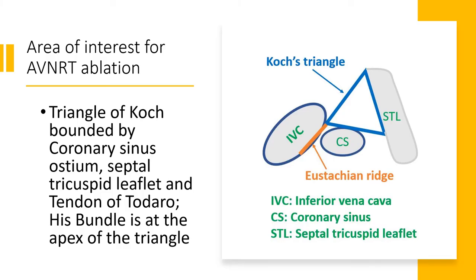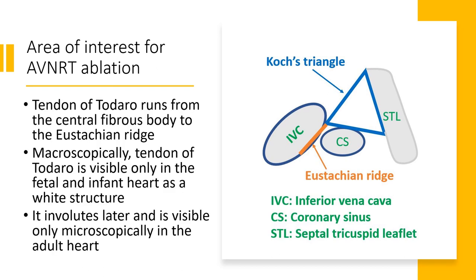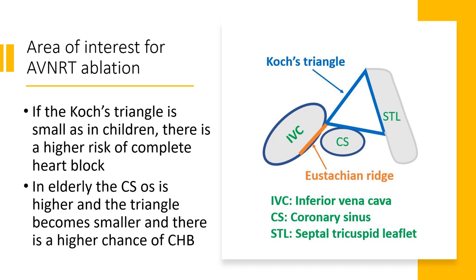The area of interest for AVNRT ablation is the Triangle of Koch, bounded by the coronary sinus ostium, the septal tricuspid leaflet, and the tendon of Todaro. The His bundle is at the apex of the triangle. The tendon of Todaro runs from the central fibrous body to the Eustachian ridge, and is visible as a wide structure only in the fetal and infant heart, involuting to microscopic size in adults. If the Triangle of Koch is small, as in children or in the elderly where the CS ostium is positioned higher, the triangle becomes smaller and there is a higher risk of complete heart block during ablation.